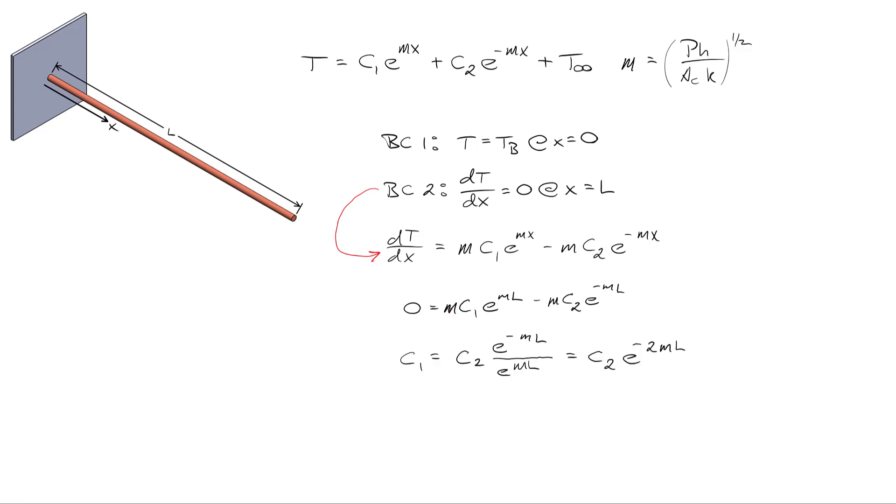A little bit of algebra allows us to solve for C1 as a function of C2, dividing out by m, bringing this right hand term over to the left and we could find that C1 is equal to C2 multiplied by the ratio of e to the negative mL divided by e to the negative mL, simplifying it's C2 times e to the negative 2mL.